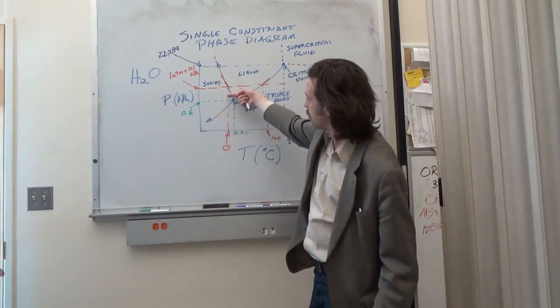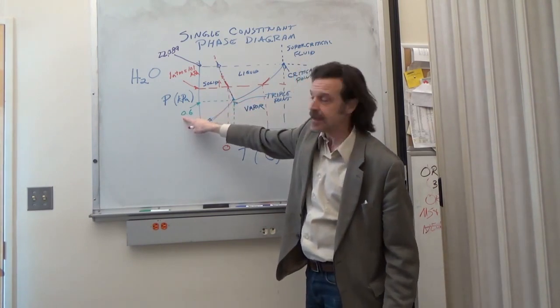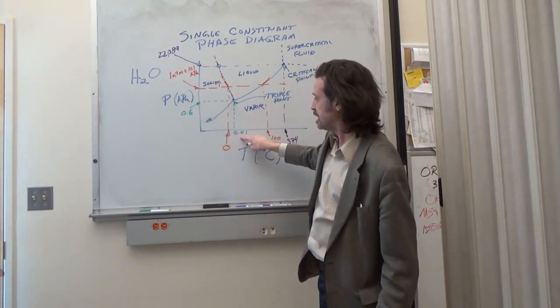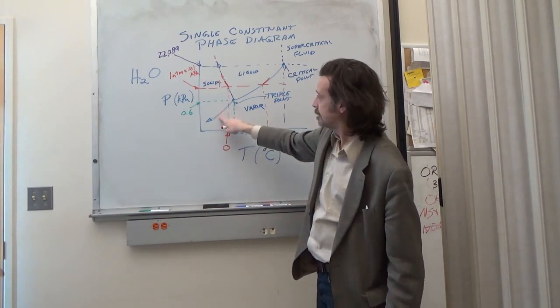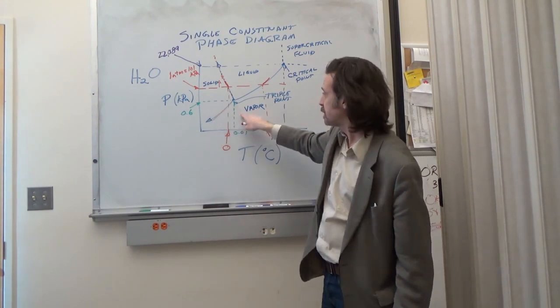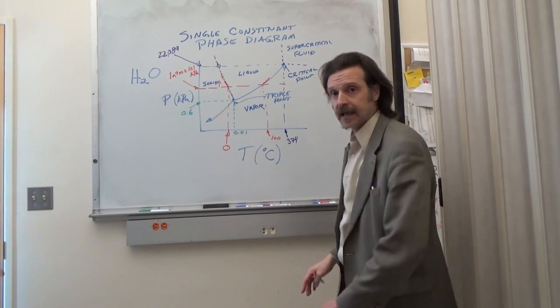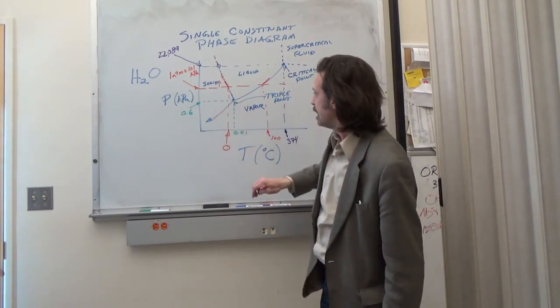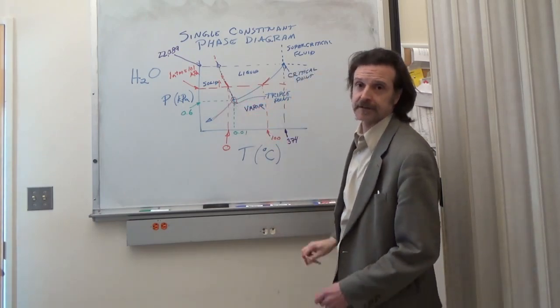Below this pressure of 0.6 kPa and below the temperature of 0.01 degrees Celsius you have sublimation where the solid will turn straight into the vapor without going through a liquid phase. So there is no longer a melting temperature. Which brings us to this point. This point is called a triple point.